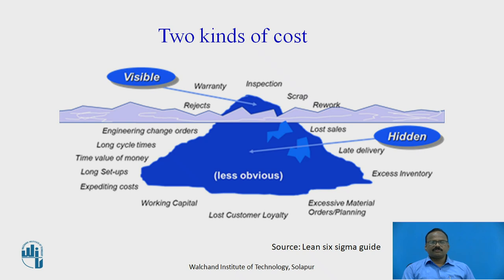Visible costs include: rejection, warranty, inspection, scrap, and rework. Rejection leads to high product cost because manufacturing cost increases. Warranty claims from customers damage the company's reputation. Inspection cost must be optimum — acceptance sampling is generally used instead of 100% inspection to achieve this. Scrap must be avoided as it is negative for every organization. Rework should be kept minimum, though sometimes it is essential. It is necessary to minimize both visible and hidden costs.